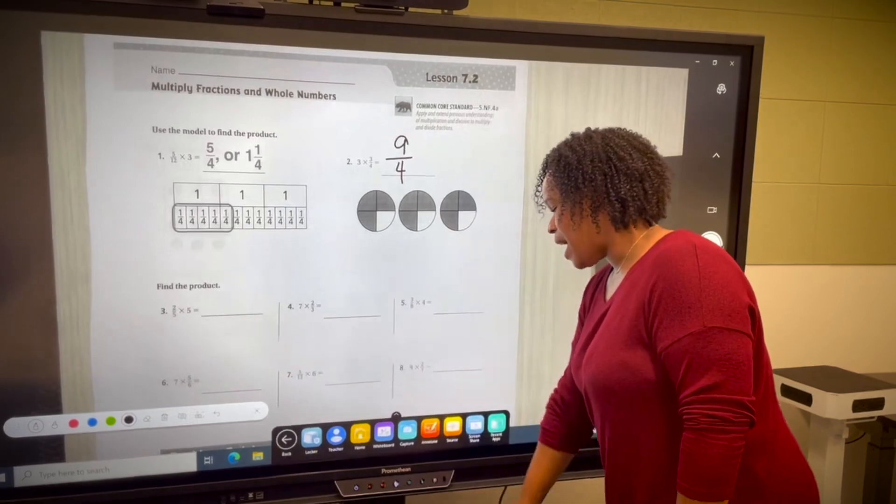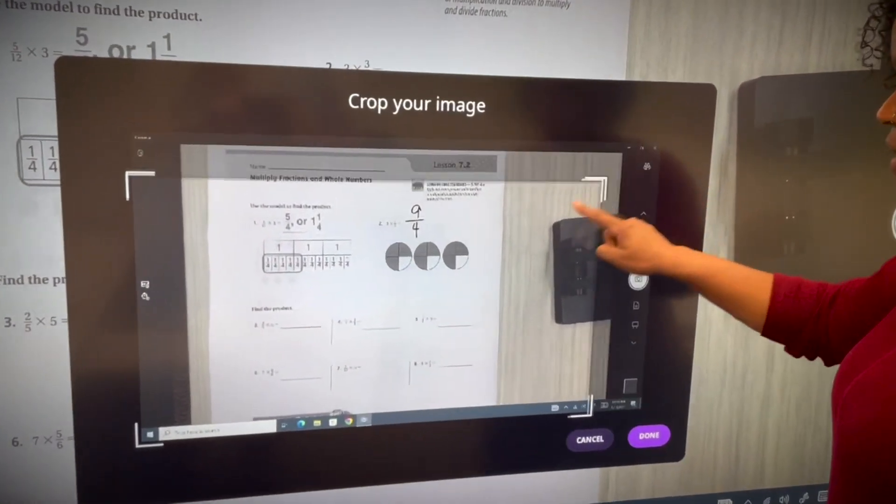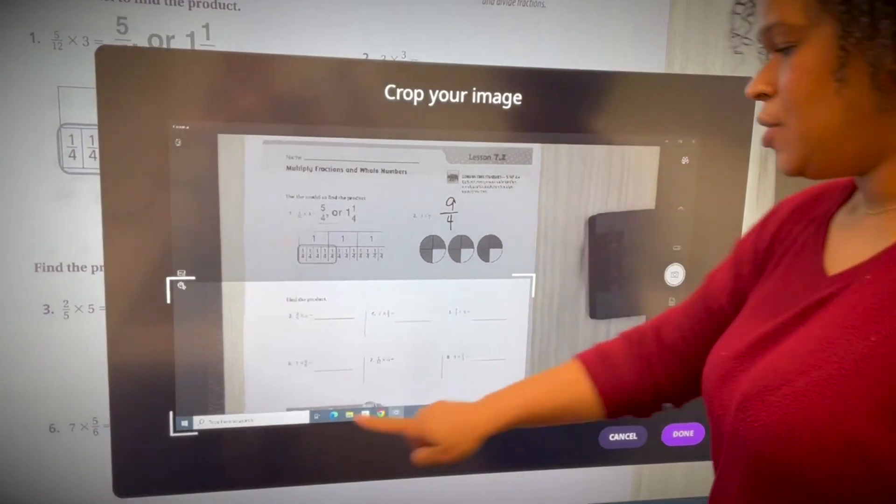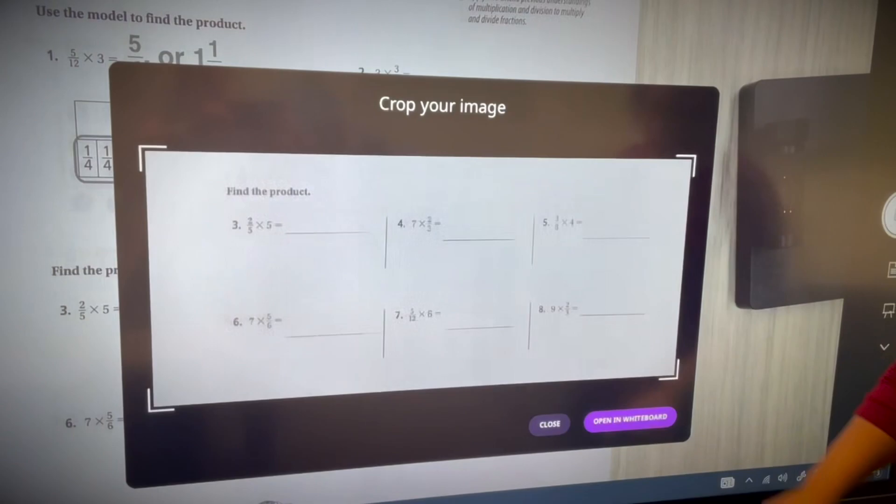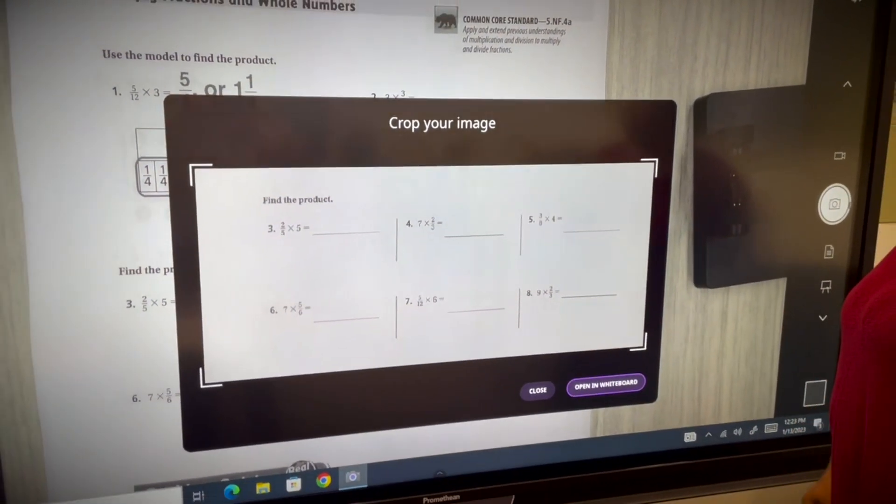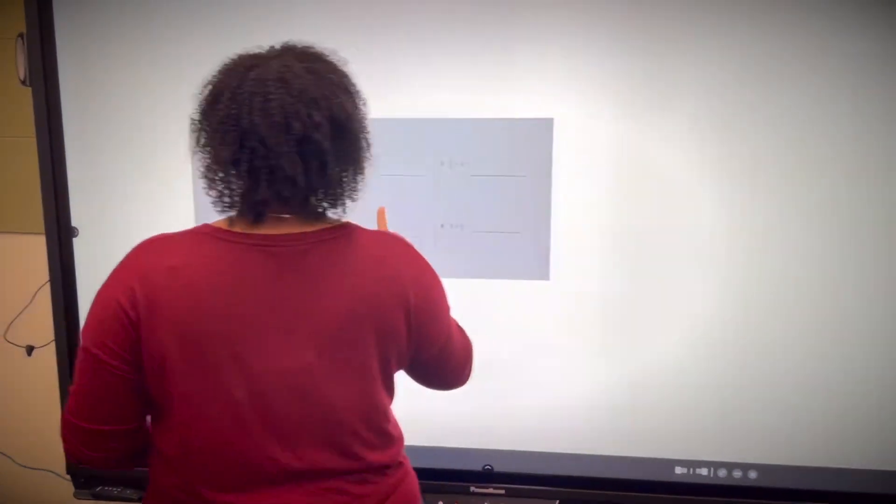I'll access my capture tool. I'm going to crop down my image just like that. Click done. I'm going to open this in our whiteboard so that we can have students come up here to access the content and work together.